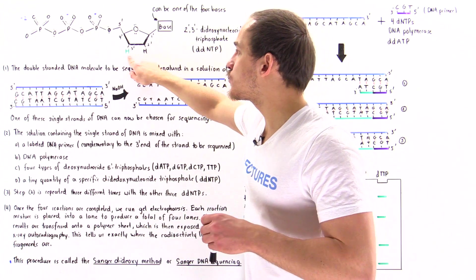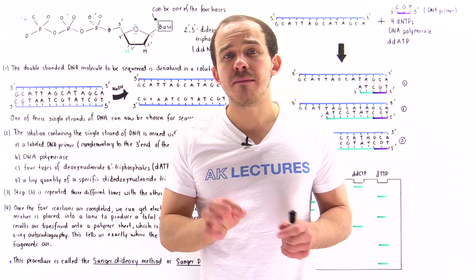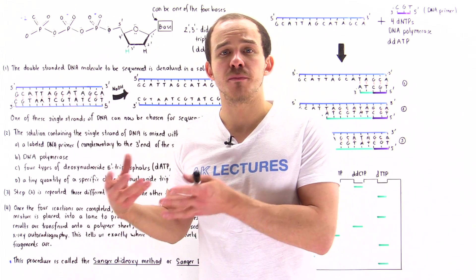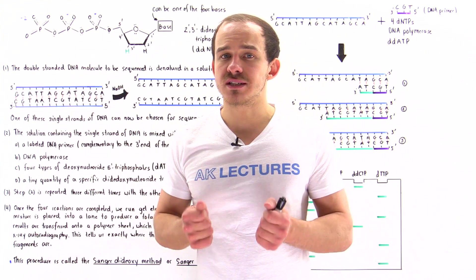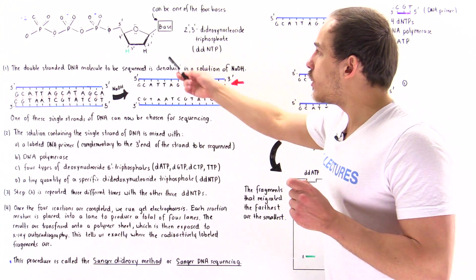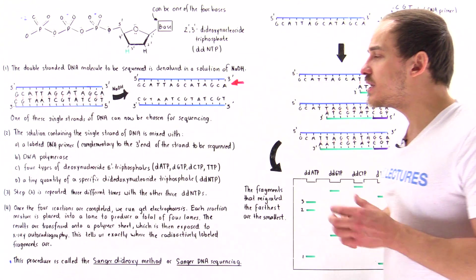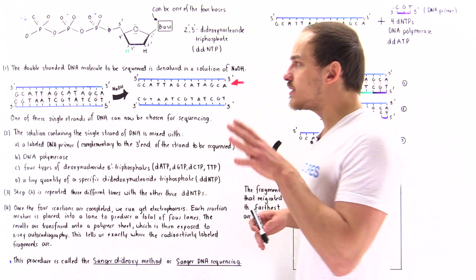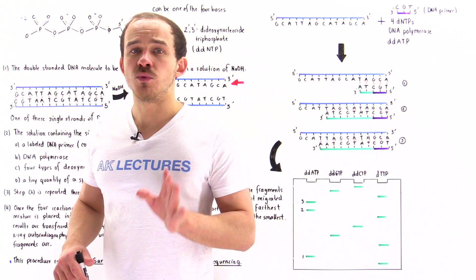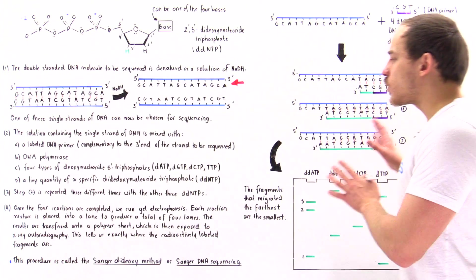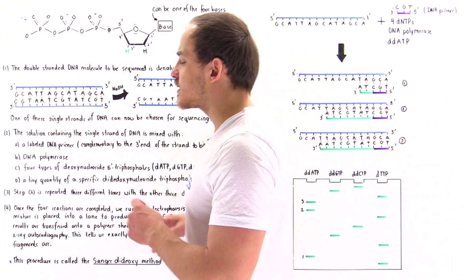If that hydroxyl group is not present, as in the case of ddNTP, DNA polymerase will not be able to form that phosphodiester bond, and so DNA replication would essentially stop. This is what the ddNTP molecule is used for in this method — to basically stop the process of DNA replication, and we'll see why that's important towards the end of this lecture. Let's move on to the four steps.